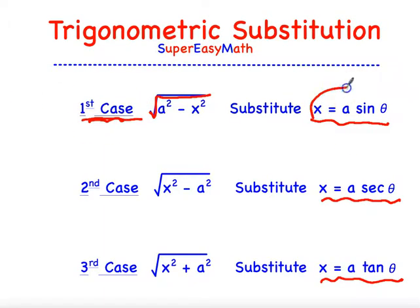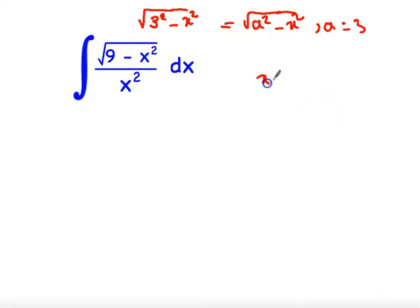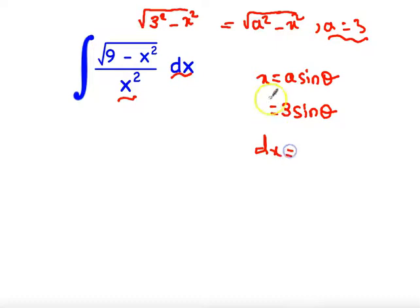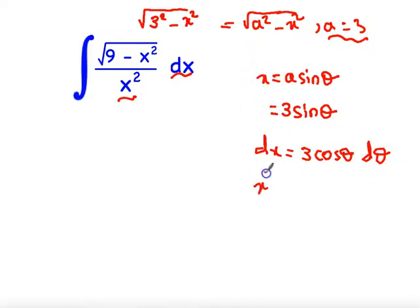We take x = a·sinθ. Since a = 3, we get x = 3·sinθ. Now we find dx and x²: differentiating both sides gives dx = 3·cosθ dθ, and x² = 9·sin²θ.